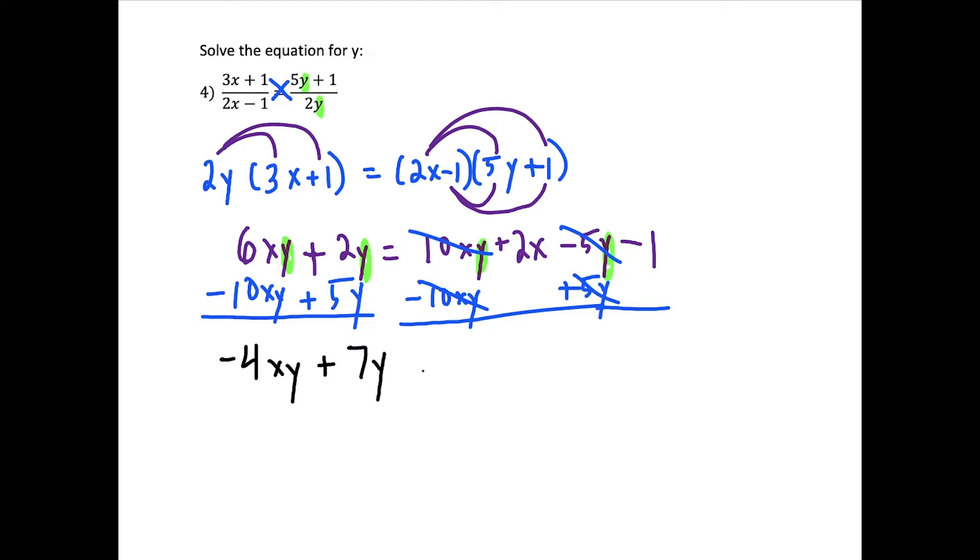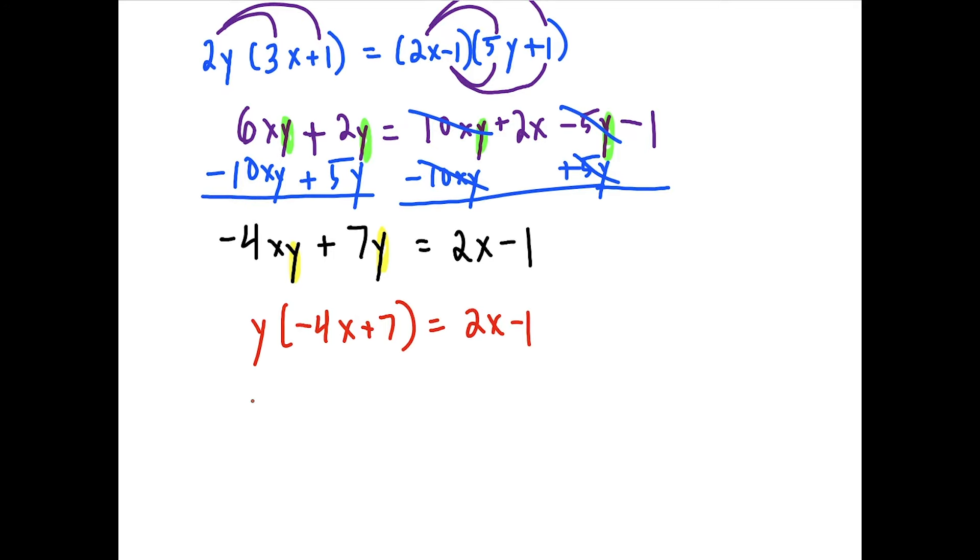And then on the right side, all we have left is 2x minus 1. And it may not seem like we accomplished much, but the left side has a common y term that can now be factored out. So we're going to factor out this y. And we're left with negative 4x plus 7. And this is equal to 2x minus 1. So then all we have to do here to solve this, we're going to divide both sides by negative 4x plus 7. And our final answer to the last question, we have y equals 2x minus 1 over negative 4x plus 7.